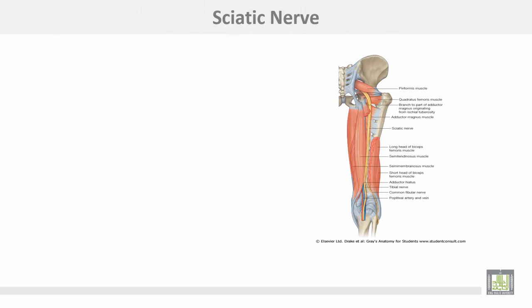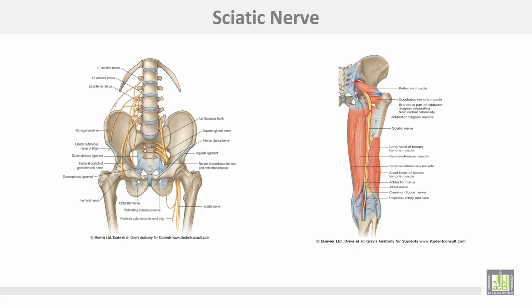This is the sciatic nerve coming out from the pelvis through the greater sciatic foramen, below the piriformis muscle. It divides into two terminals at the back of the thigh: the tibial and the common peroneal nerves. This is the sacral plexus inside the pelvis, which gives rise to the sciatic nerve.